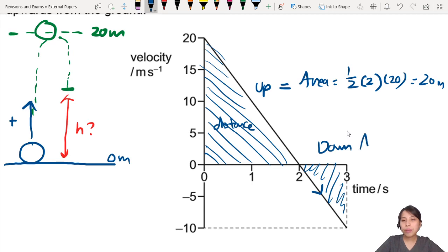So the area will be a half base, which is one second, times height, which is 10. So this is five meters. So it means the ball will go up 20 meters and come down by five meters. So this will be at 15 meters.